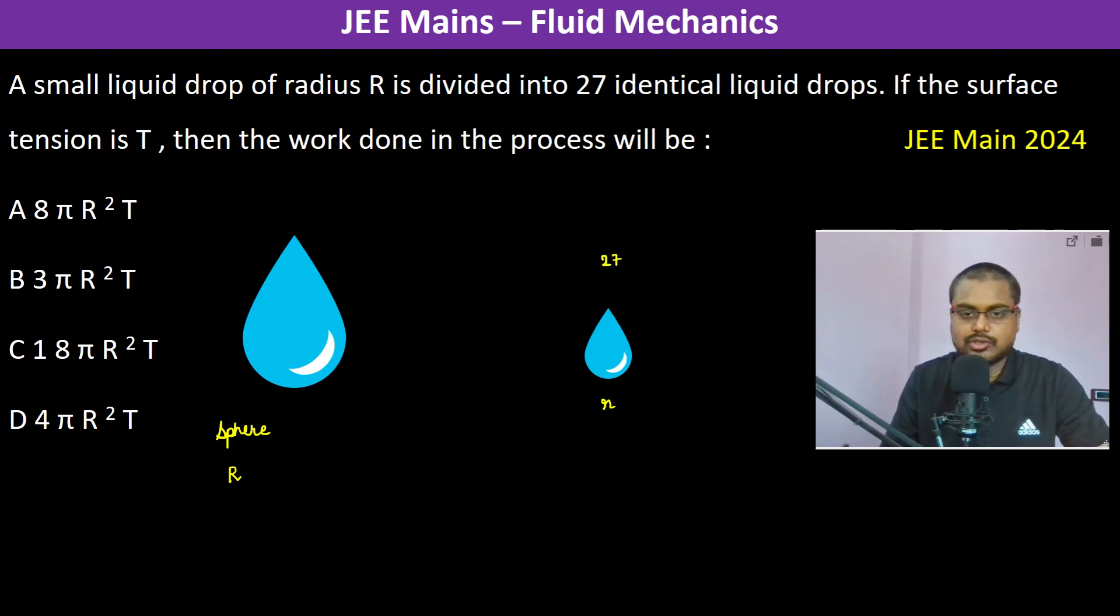We can write 4 by 3 pi R cube, which is the volume of the big droplet, should be equal to 27 into 4 by 3 pi small r whole cube, which is the volume of small droplet. So 4 by 3 pi cancels out, and therefore R is actually 3r.